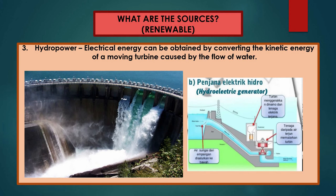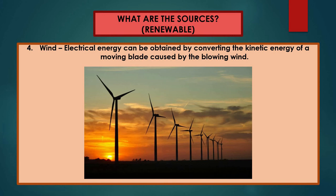Hydropower — we can obtain electrical energy by converting the kinetic energy of a moving turbine caused by the flow of water. The water flows and reaches the turbine, spinning it and producing kinetic energy, which is then converted to electrical energy delivered to houses. Wind can also produce electrical energy by converting the kinetic energy of moving blades caused by blowing wind — when wind rotates the blades, it produces electrical energy delivered to houses.